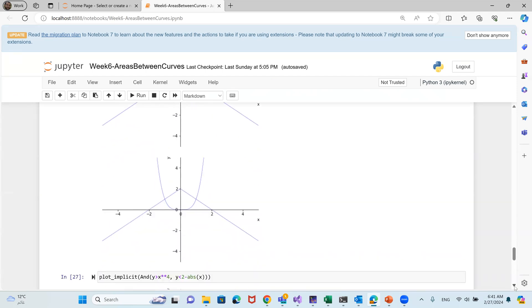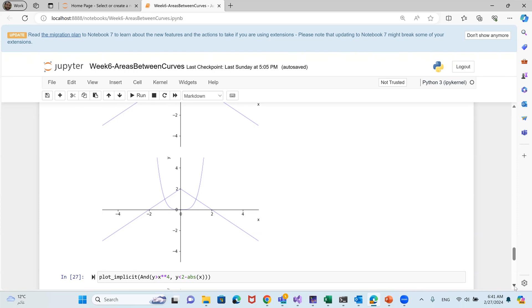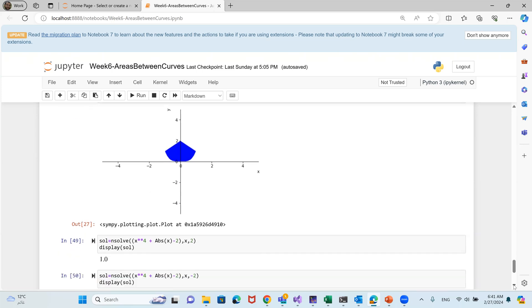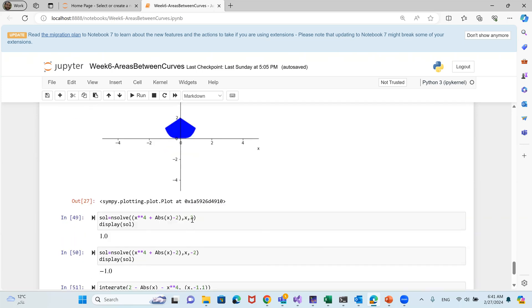One on top of the other. This is it. And if you want to dash, you use the AND command, and you plot_implicit. That's the region we're talking about. To find the points of intersection, we'll use the nsolve. Here we go. We start by initializing from 2, we get 1. Initializing from minus 2, we get minus 1. And we will integrate.